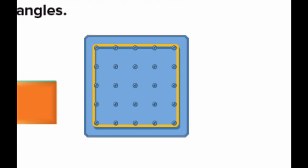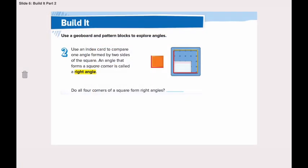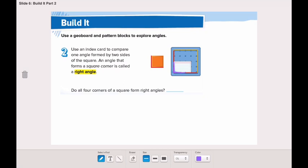Now let's explore angles. We're going to use a geoboard. Get your index card and look at page 833. When we put the index card to compare one angle formed by two sides, we place the index card to compare the angle of the square in the geoboard. That angle is called a right angle. A right angle is an angle formed by a square corner — the sides are exactly on the sides of the index card, just like a square.